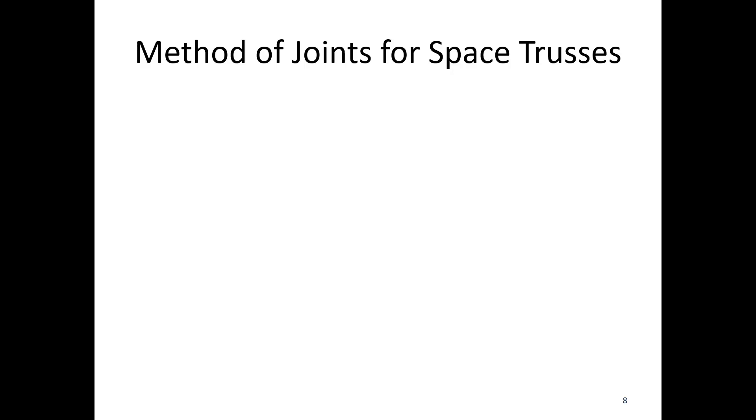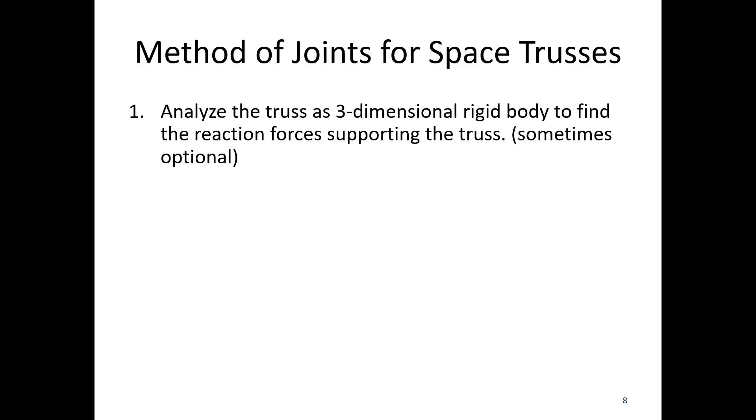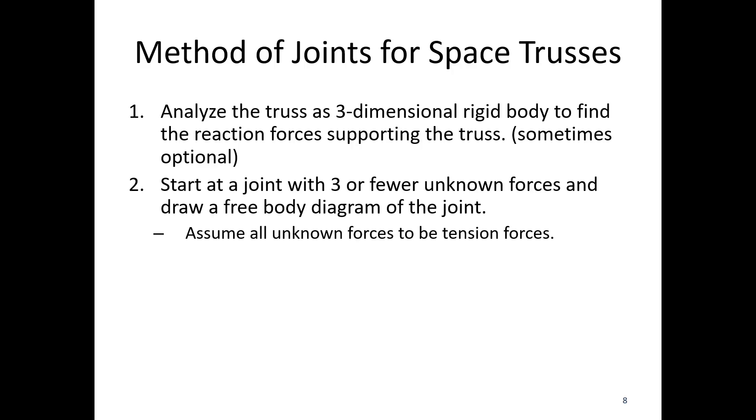Alright, so method of joints and space trusses, how do we modify this? So if we analyze the truss as a three-dimensional rigid body system, we have reaction forces supporting the truss. So this is sometimes optional. We can skip this step sometimes if we have few enough members in the whole system. But we would have up to three force equations for the entire rigid body and three moment equations for the entire rigid body, which can get quite cumbersome. So optionally, find the external forces first.